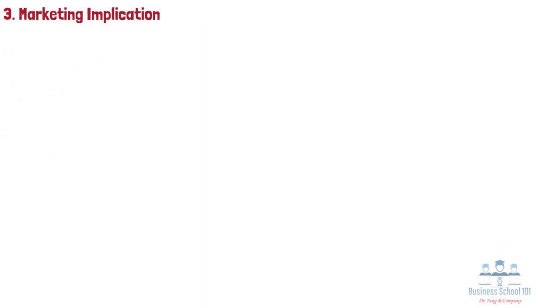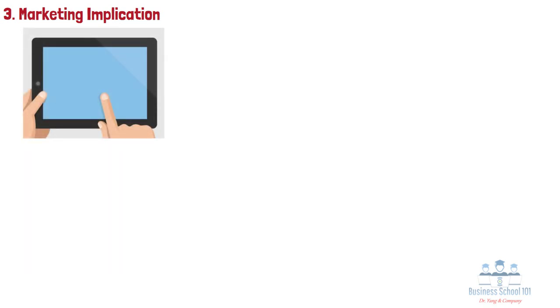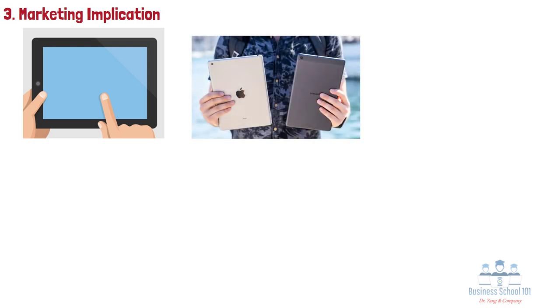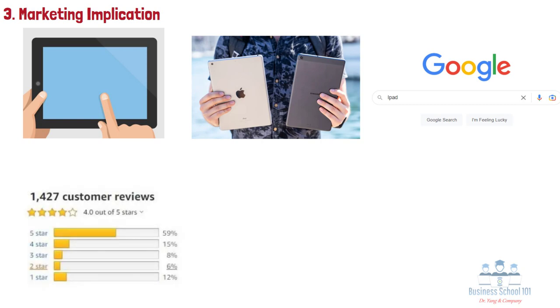Section 3: Marketing Implication. Confirmation bias could influence marketing as well. Let's imagine that you are thinking of buying a tablet PC and want to buy an iPad more than Samsung Galaxy Tab. You will likely search for an iPad instead of Galaxy Tab on a search engine such as Google. The results based on your search data will show information confirming your attitudes by showing you positive articles, consumer reviews, and product websites that favor the iPad over Samsung Galaxy Tab.